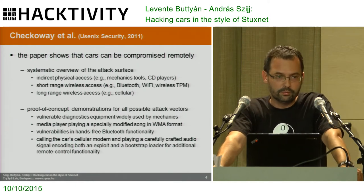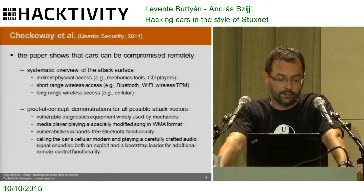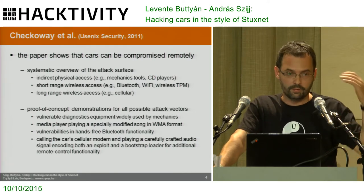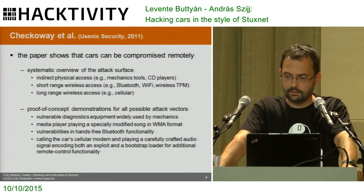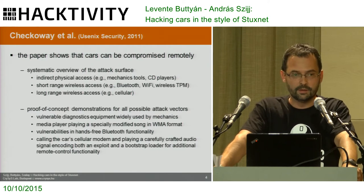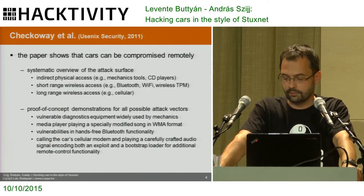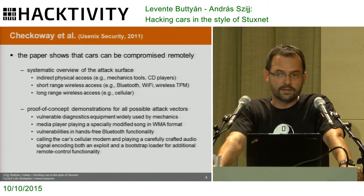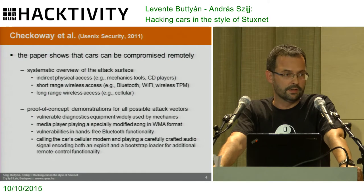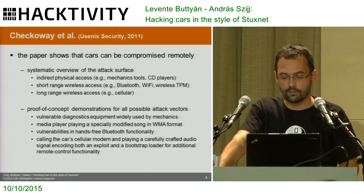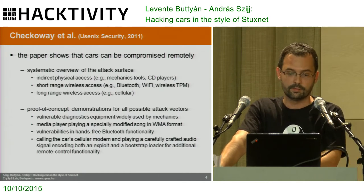They also demonstrated exploitable vulnerabilities in the Bluetooth stack. Another attack exploited a bug in the GSM module — they called the car remotely and played a specially crafted audio file which exploited the bug and loaded additional software onto the GSM module. Once these modules are compromised, on the CAN bus there is basically no more protection — from one compromised ECU you can jump to the next and essentially take over the whole car.